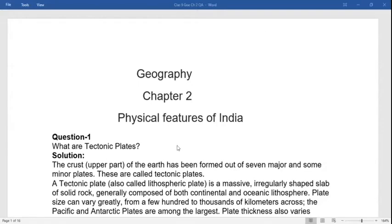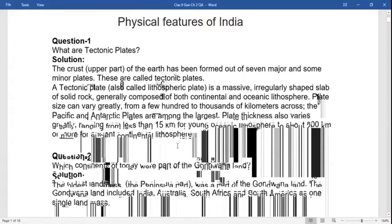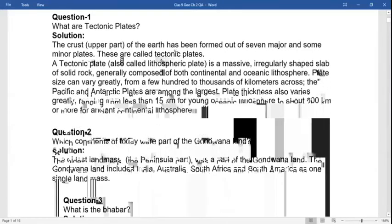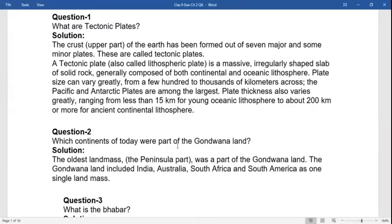Answer: The crust, the upper part of the earth, has been formed out of seven major and some minor plates. These are called tectonic plates. A tectonic plate is a massive, irregular-shaped slab of solid rock, generally composed of both continental and oceanic lithosphere. Plate size can vary greatly from a few hundred to thousands of kilometers across. Plate thickness also varies, ranging from less than 15 kilometers of young oceanic lithosphere to about 220 kilometers of ancient continental lithosphere.